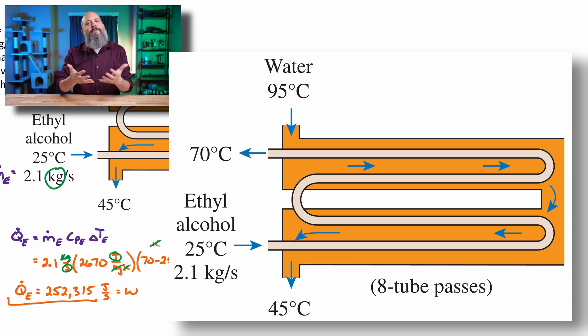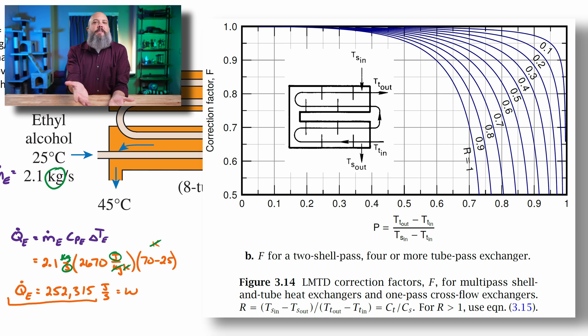And then the inlet to the water, that first shell pass sees another four passes of the ethyl alcohol. So it's kind of like counter flow, but a little bit more complicated because of all the zigzags. That's the reason for the correction factor.